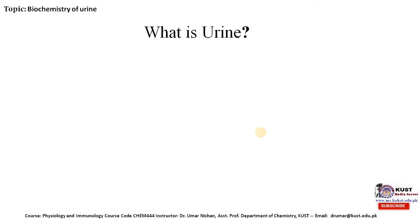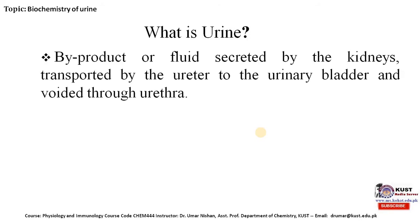So what is urine? Urine is the by-product of liquid secreted by the kidneys, transported by the ureter to the urinary bladder and voided through the urethra. So it is the by-product of the fluid that is secreted by the kidneys.